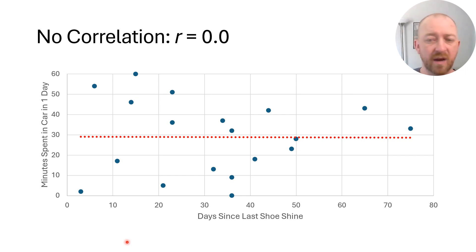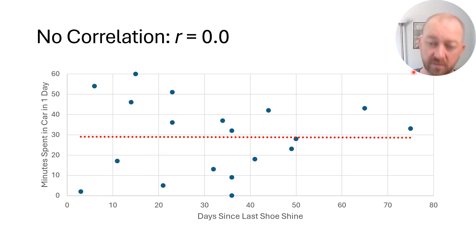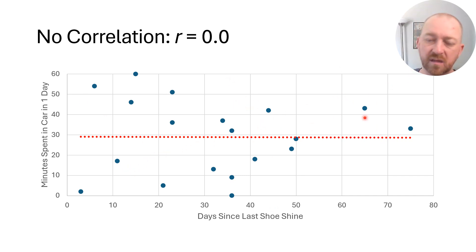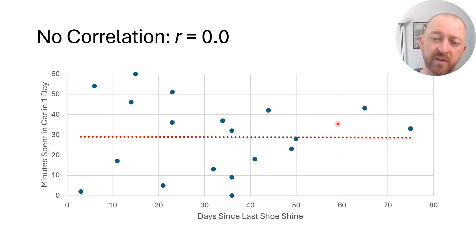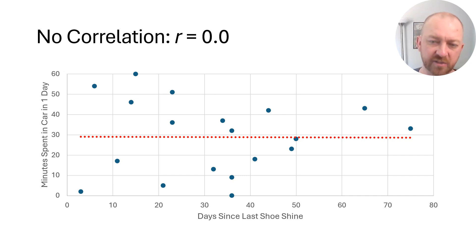A moderate positive correlation would have a general slope going from lower left to upper right, but the dots making up the data would be more spread out around the line — by definition a weaker correlation than a perfect one.